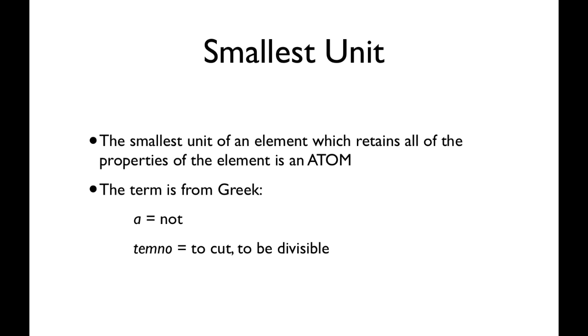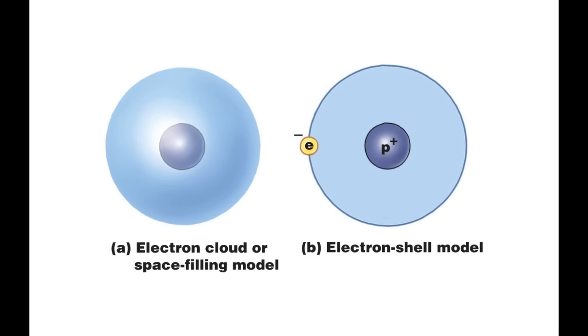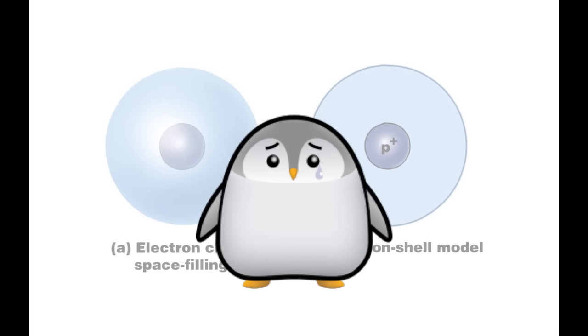Okay, so the smallest unit of an element which retains all of the properties of that element is called an atom. That word comes from the Greek, a term which means not to be divisible, meaning you can't cut it up into smaller pieces and still retain the properties of the element. We can actually see atoms today. This is a really cool transmission electron micrograph done by the physicists at UC Berkeley. The red arrows are hydrogen. That black arrow is a carbon atom shown on the surface of graphene. Now in your textbook, you will see atoms drawn like this: electron clouds, the shell or Bohr model, and I got to be honest with you, this is just not true. Atoms do not look like this.